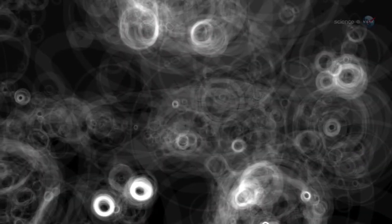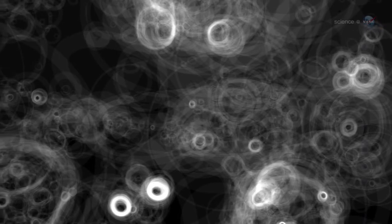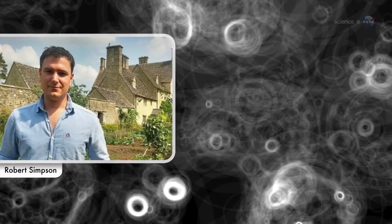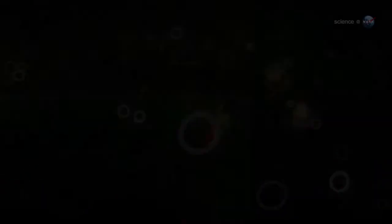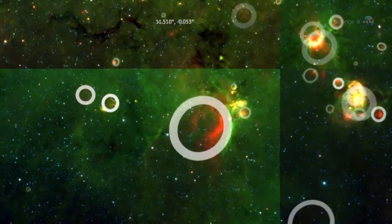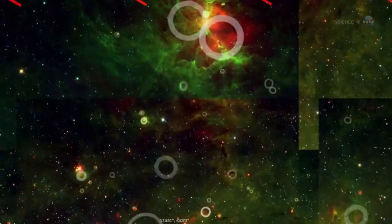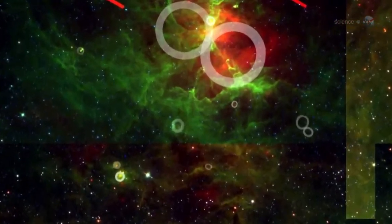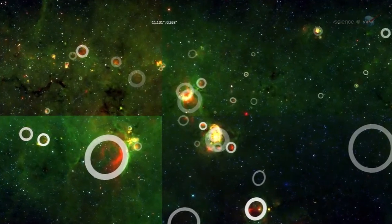Computers can find these kinds of structures, but none can yet match the power of the human eye, notes Robert Simpson of Oxford University, principal investigator of the Milky Way Project. Humans are particularly good at noticing the wispy arcs, partially broken rings, and circles within circles of overlapping bubbles in the crowded galaxy.